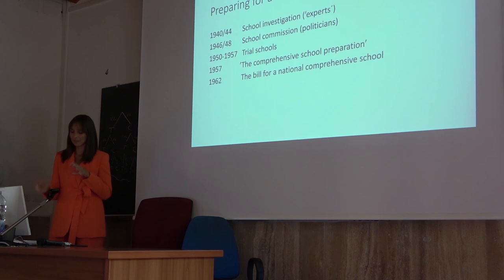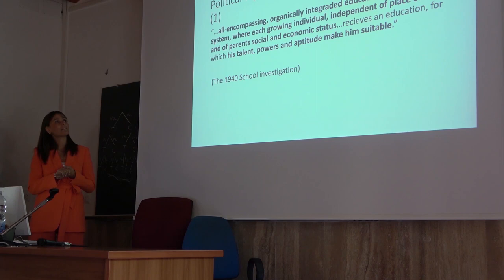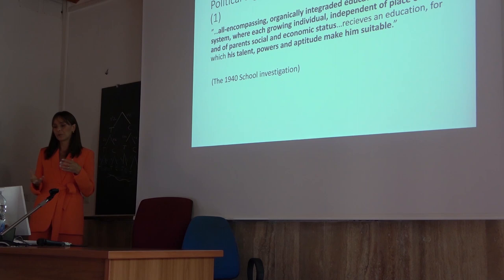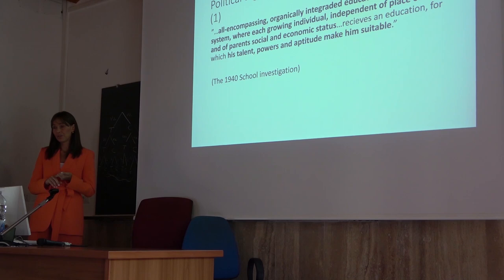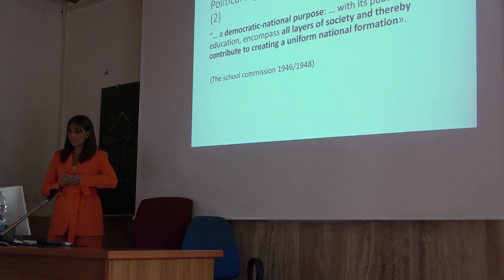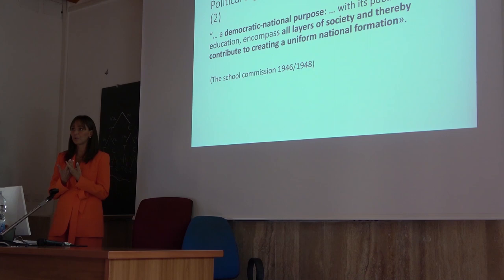The political arguments for the comprehensive school — the school for all — are twofold. First, from the school investigation in the 1940s, they wanted an all-encompassing, organically integrated educational school system where each individual, independent of place of birth, social and economic status, should receive the same kind of education where individual talent, powers, and aptitude were taken into consideration. There was also, as presented in the school commission from 1946, a democratic national purpose, where all layers of society should contribute to creating a uniform national formation.